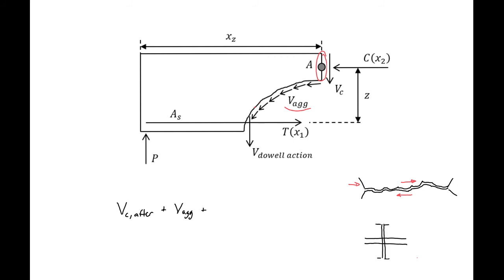The final component is dowel action which we'll have at our longitudinal bar down in the bottom. You can think of that if we have a bar that's crossing our cracking plane, if you tried to move one side in relation to the other, this bar is going to resist that movement.